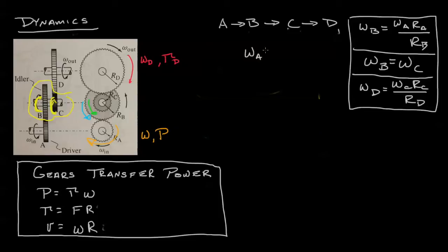We start off with our first one, omega A Ra over RB equals omega B. Well, we don't want to know omega B. We want to use that to figure out omega C. Well, omega B and omega C are equal.